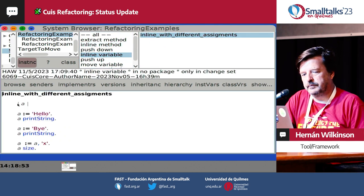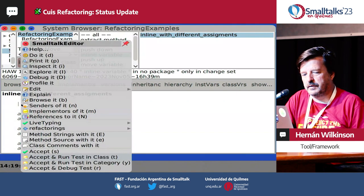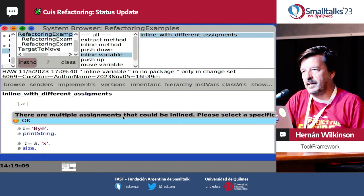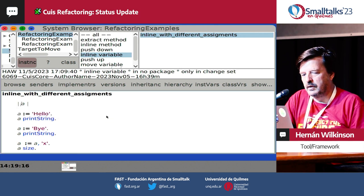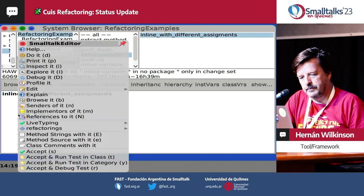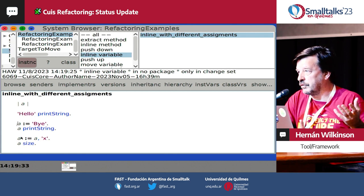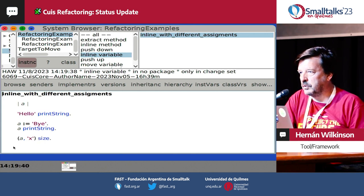Inline variable. We have here one variable A with many different assignments. The inline variable is the opposite of the extract variable. If you try to inline the variable from the declaration, it will not allow it because there are multiple assignments and it doesn't know which value to inline. But if you position here and inline from there, it will inline up to the next assignment — because if not, it is not a refactoring. So you can inline there and you can inline here, and it works as expected.